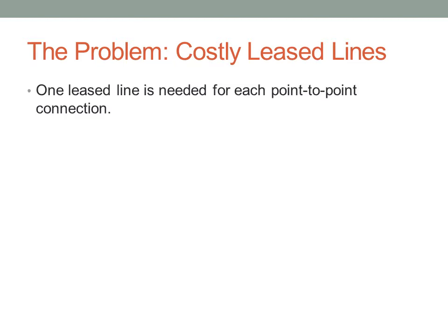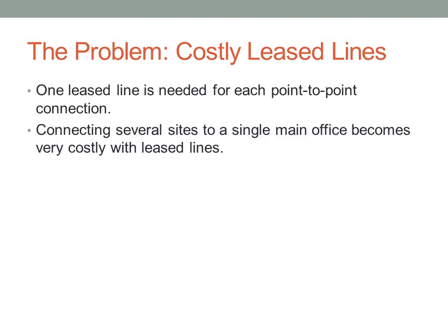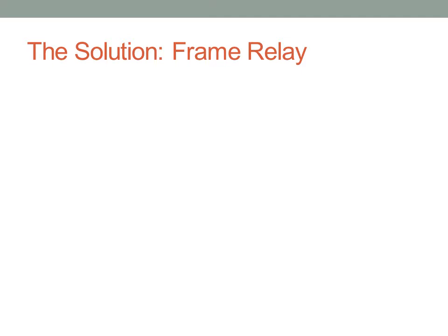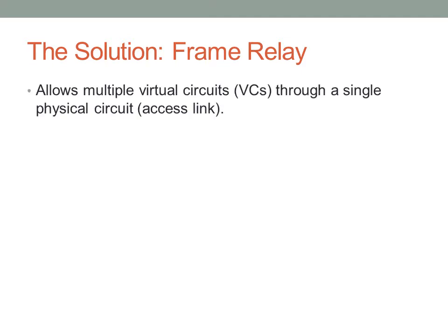Leased lines are kind of expensive because they're always on and you have to have one point-to-point connection for each connection outbound. With several sites connecting to a single main office, you need one leased line per site, which gets really costly really fast. Leased lines have constant bandwidth that the telco could be using when you're not. Frame Relay allows many different virtual circuits — rather than a physical switched circuit, you have one physical access link to the telco, which then automatically switches to several different virtual circuits.